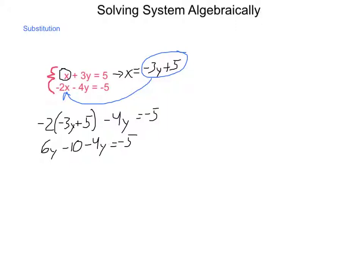Combine my like terms, so I get 2y - 10 = -5. Now it's a two-step equation. I add 10 to each side. 2y = 5. Divide by 2. I come out with y is 2.5.